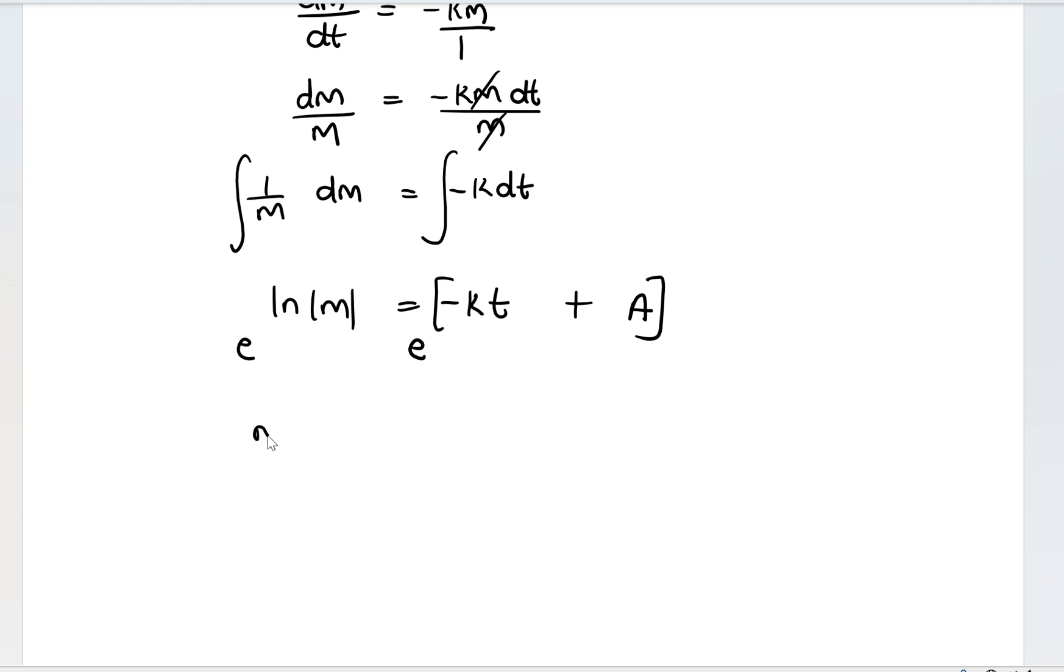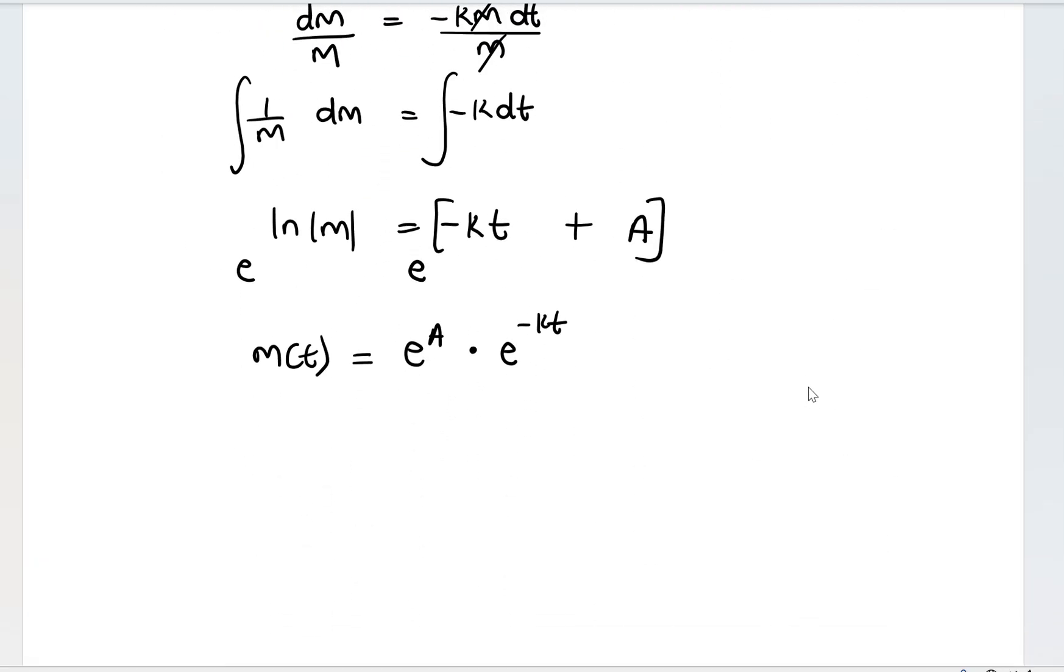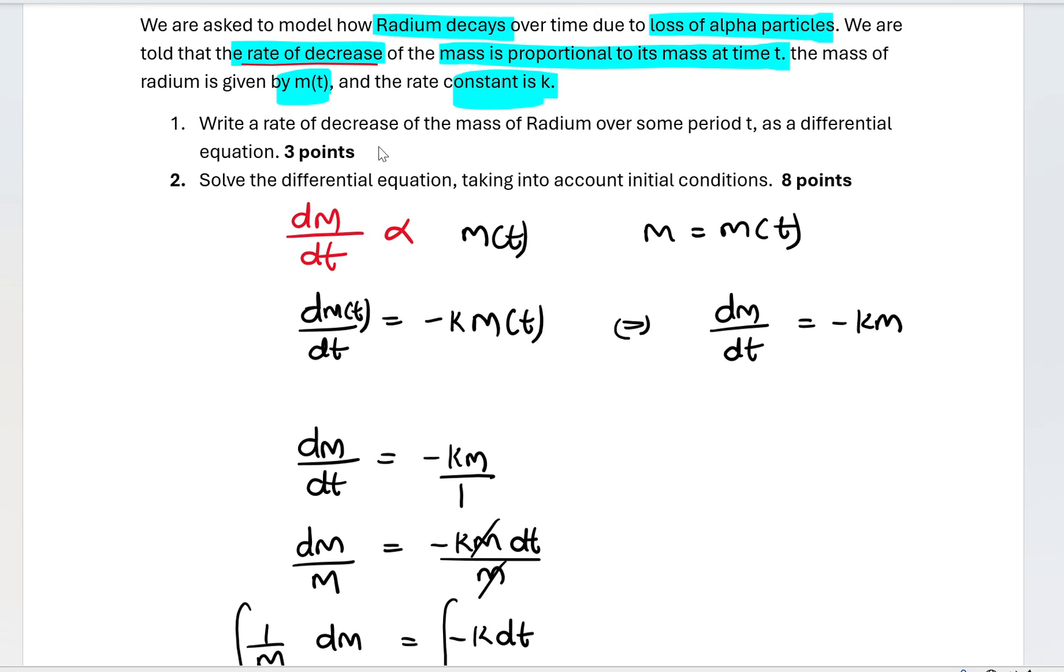If I do that, I'm going to have m, which is a function of t, is equal to e^a multiplied by e^(-kt). So we didn't even follow what the questions are saying, we just went straight into answering. The question wanted us to write the relationship of the decrease of mass of radium over time as a differential equation. After writing this, you've got three points.